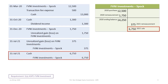Once we've remeasured the shares being disposed of, we can record the actual sale. The company will receive $6,750, which is 2,500 shares times $2.70. So we debit Cash and credit FVNI Investments — Spock for $6,750, entering that as a credit in the T-account.